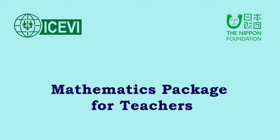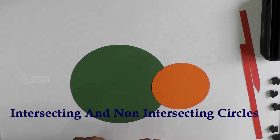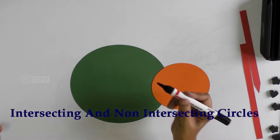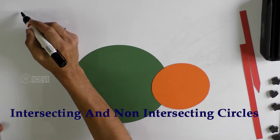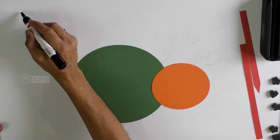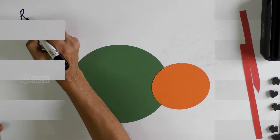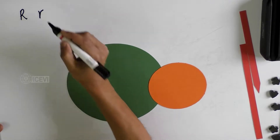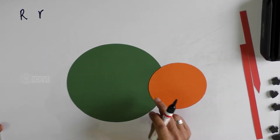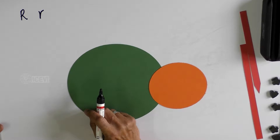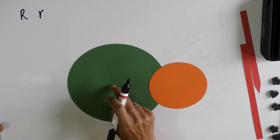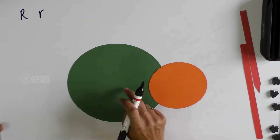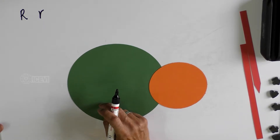The ICBI Nippon Foundation mathematics package for teachers. The title of this video is 'Intersecting and Non-Intersecting Circles.' We get three values: capital R, which is the radius of the big circle; small r, which is the radius of the small circle; and D, which is the distance between the centers of the circles.